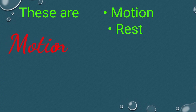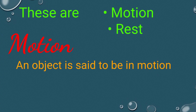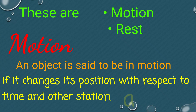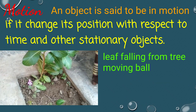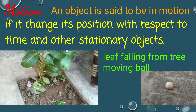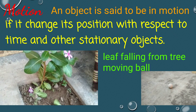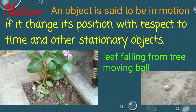Motion: an object is said to be in motion if it changes its position with respect to time and other stationary objects. For example, a leaf falling from a tree or a moving ball — they are changing their position, so these are in motion.